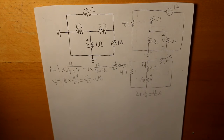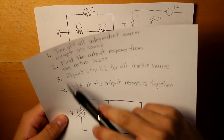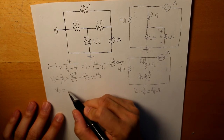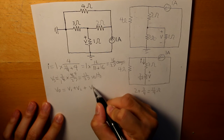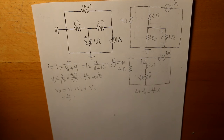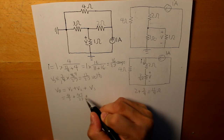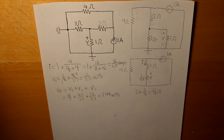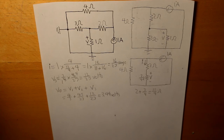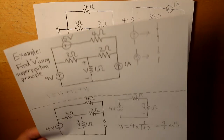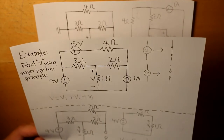Now we go to step four and add all the output responses together. V0 equals V1 plus V2 plus V3, where V1 is 4/3, V2 is 45/27, and V3 is 12/27. The sum of these three voltages is 3.44 volts, which is our final answer. We've found the voltage across the 1-ohm resistor using the superposition principle.